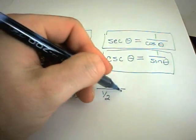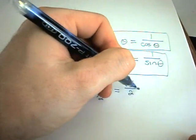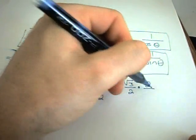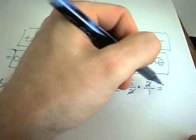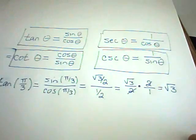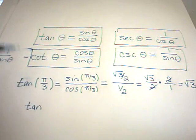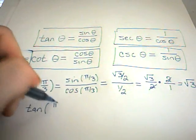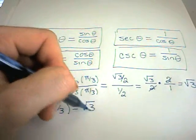And, I've got a fraction divided by a fraction. So remember to simplify, you leave the top one alone. And then you flip and multiply by the denominator. So the 2's will cancel, leaving me simply with square root of 3. So that says, in summary, that tangent of pi over 3 equals the value square root of 3.